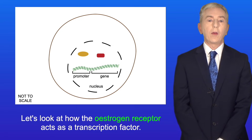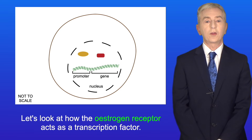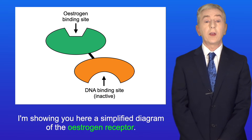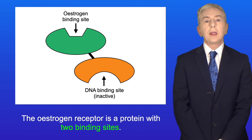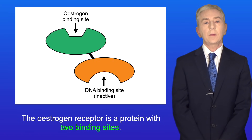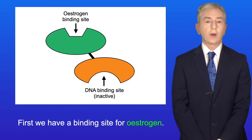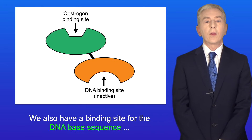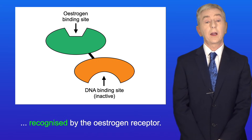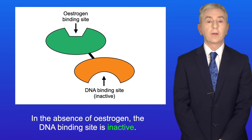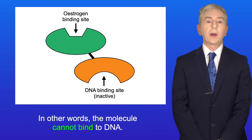Now let's look at how the oestrogen receptor acts as a transcription factor. I'm showing you here a simplified diagram of the oestrogen receptor, which is a protein with two binding sites. First we have a binding site for oestrogen, and we also have a binding site for the DNA base sequence recognized by the oestrogen receptor. In the absence of oestrogen the DNA binding site is inactive — in other words the molecule cannot bind to DNA.